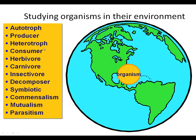Other organisms are called heterotrophs — other energy. They're consumers. They can be herbivores if they're plant eaters, carnivores if they're meat eaters, insectivores — a special type of carnivore, insect eaters. They can be decomposers that break down all of the above into their organic and inorganic molecules that could be used again.